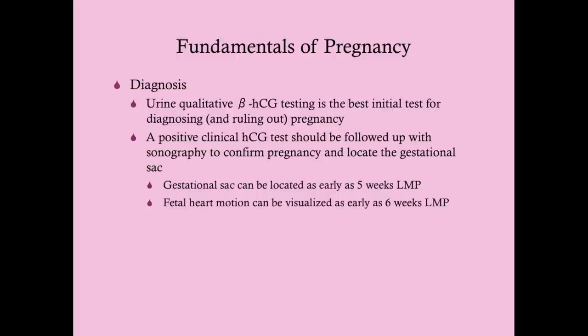To diagnose pregnancy, she takes a home test and then comes to you. You'll get your own test in the clinic. A urine qualitative beta-HCG can be obtained in the clinic, but a serum beta-HCG is even more accurate. The urine qualitative beta-HCG could be considered the best initial test, but serum beta-HCG is better — it involves a blood draw, which some women would rather avoid.